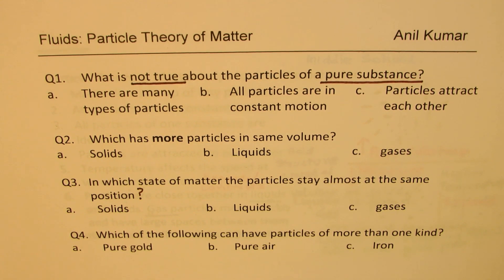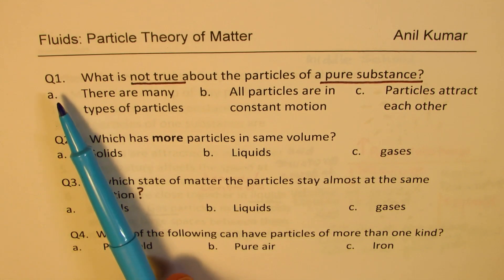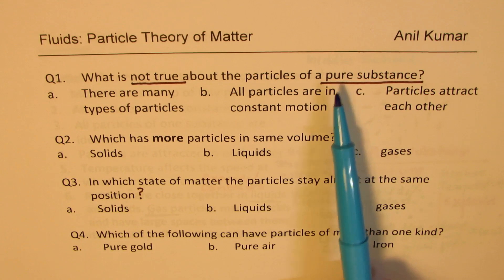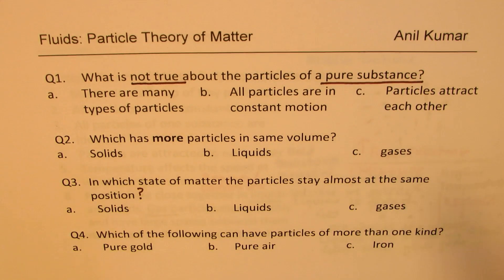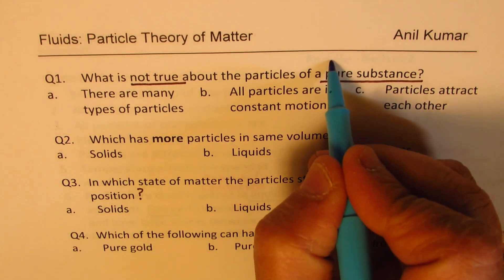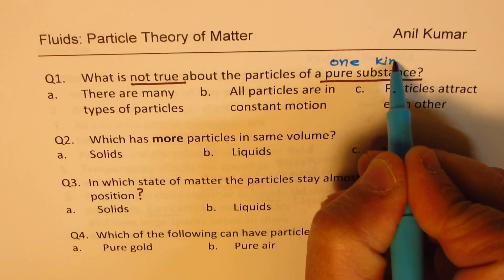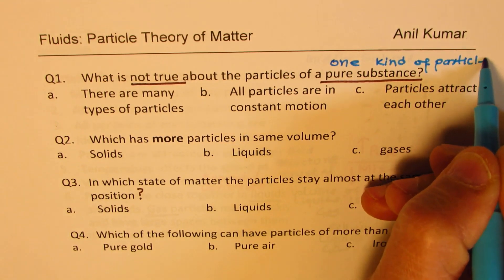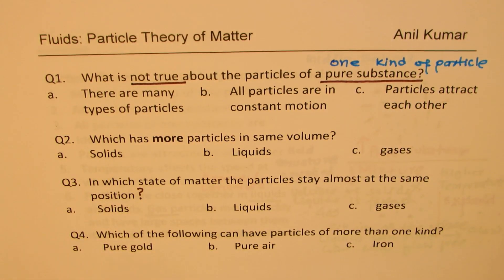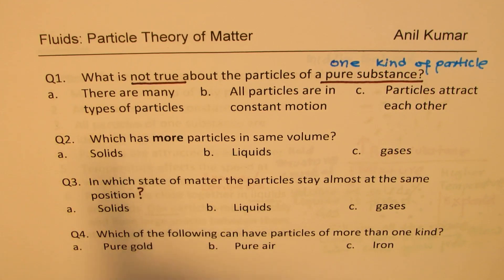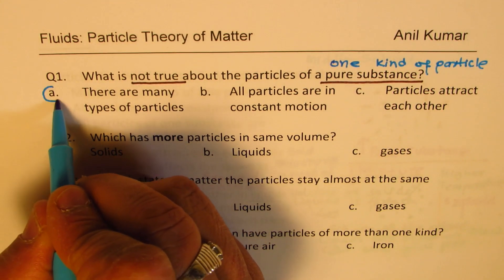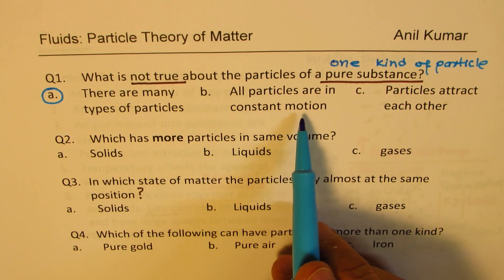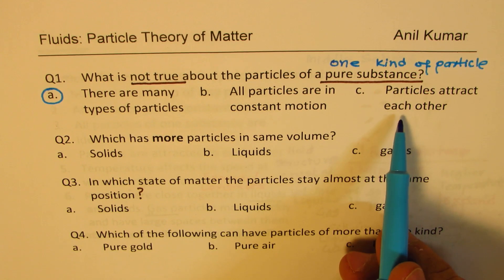Here is my solution. Question one: What is not true about particles of a pure substance? Pure substance means they should have particles of one kind only. So option A — there are many types of particles — is not true, so that is the one to circle. All particles are in constant motion? Yes, they are. Particles attract each other? Yes, they do.